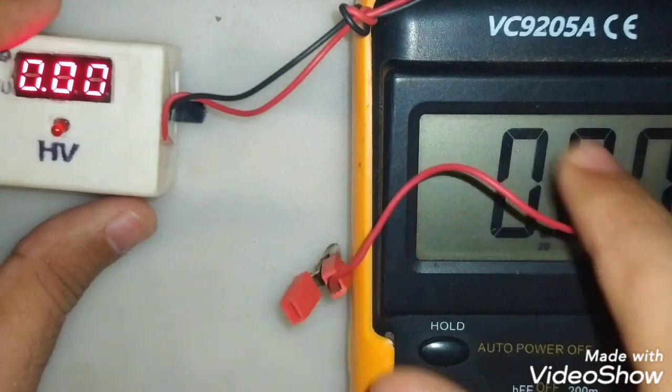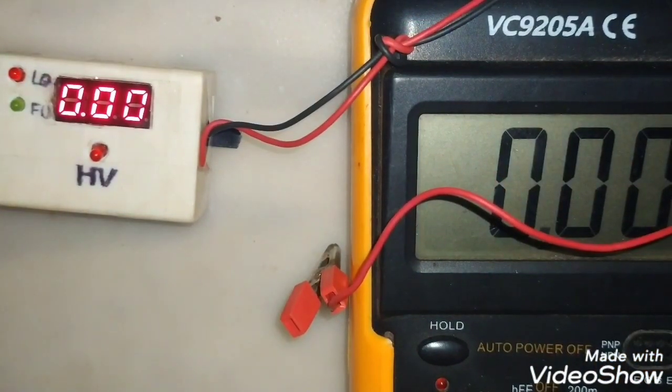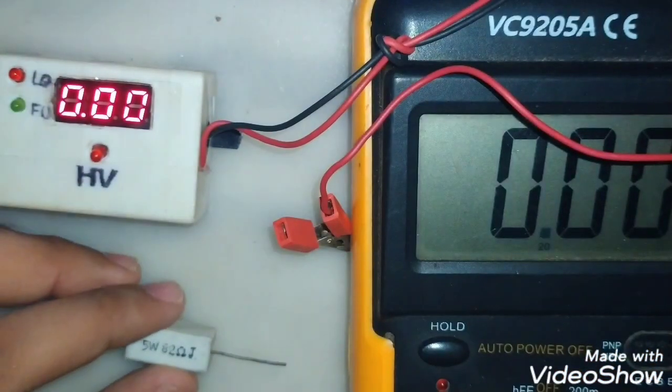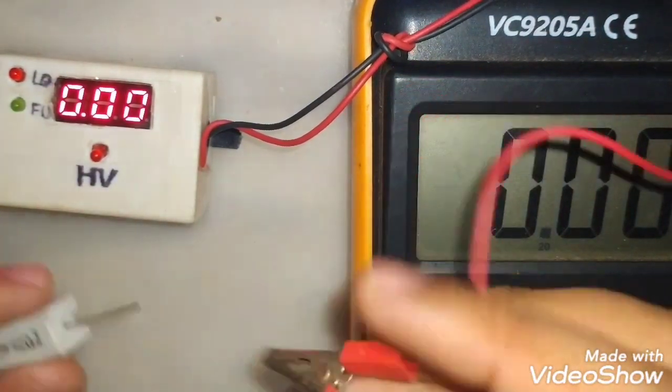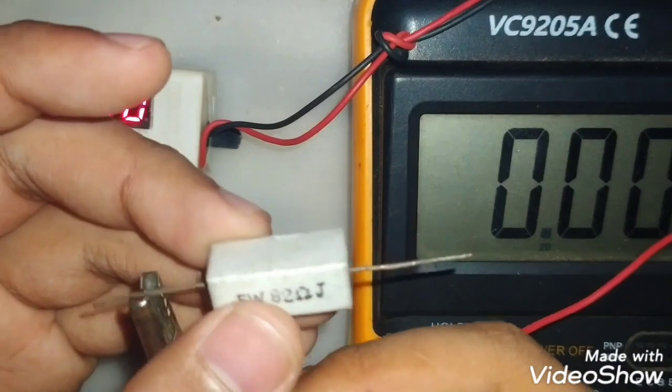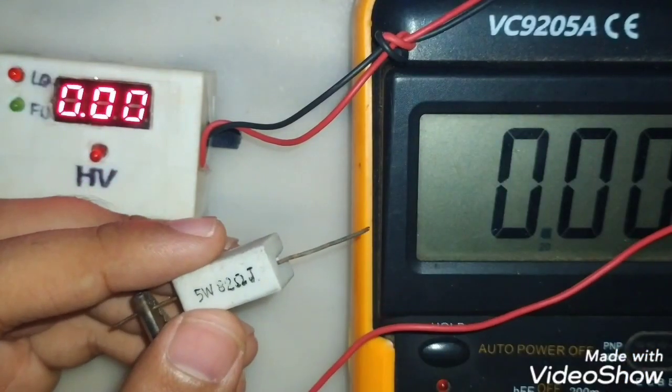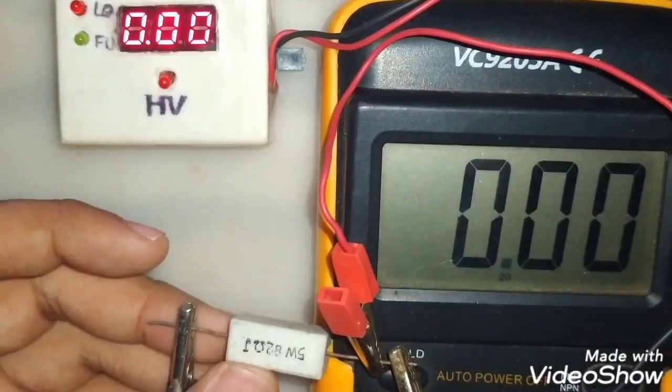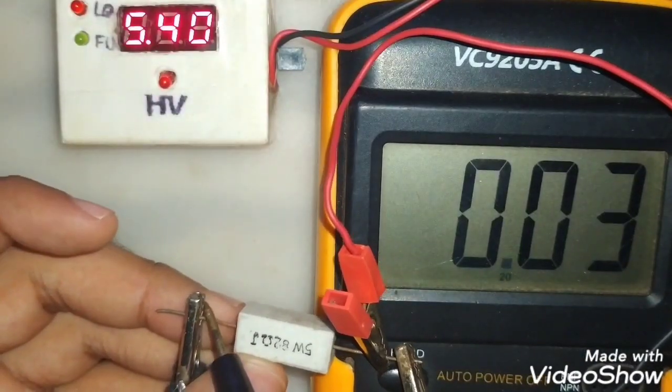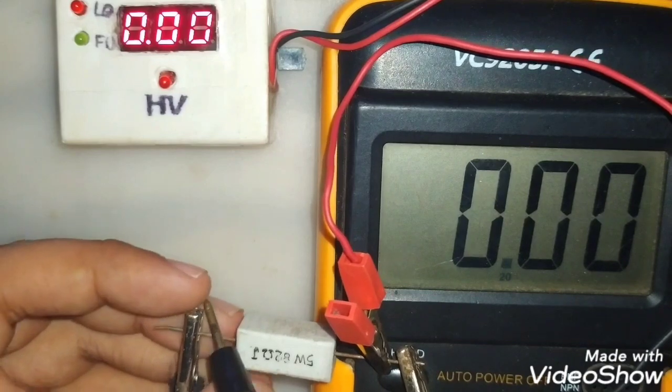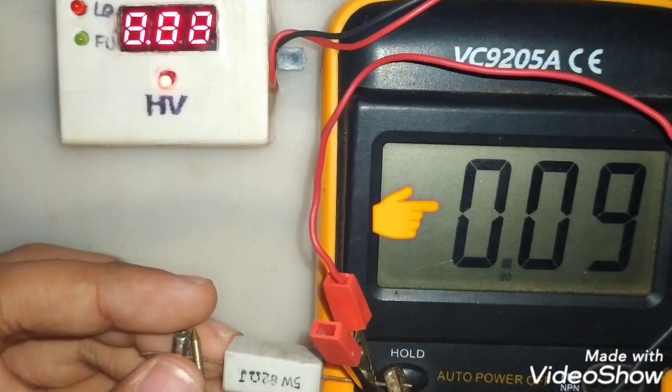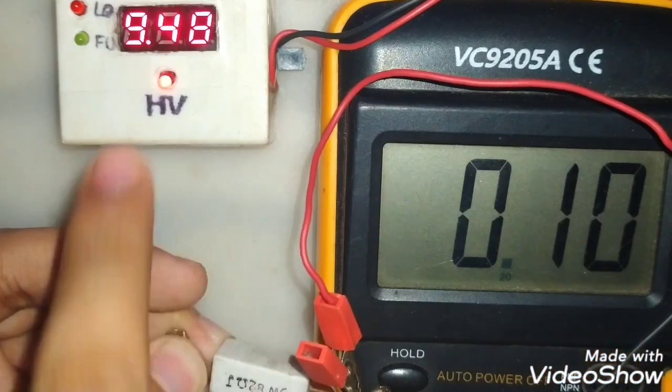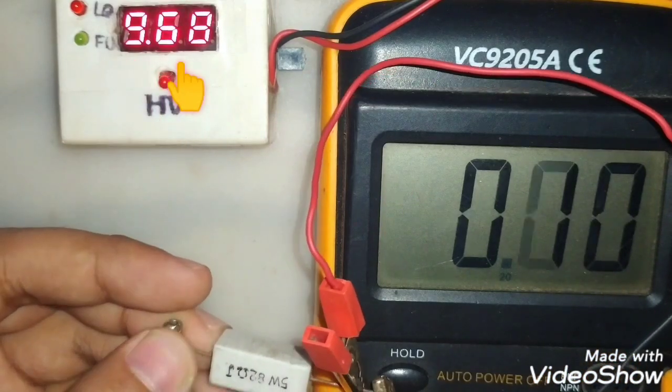First we will use 100 ohm resistor. You can see the value of the current. It's showing 100 milliamp, my multimeter is also showing the current and that is also 100 milliamp.